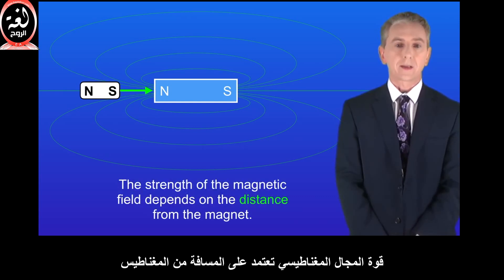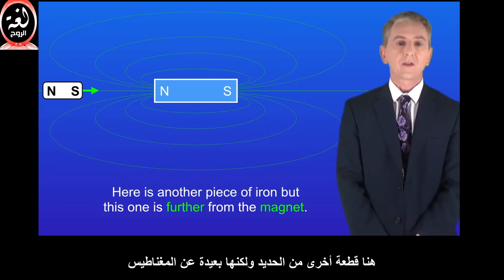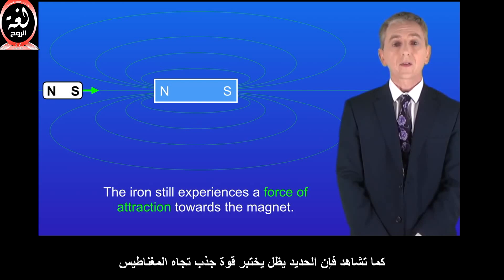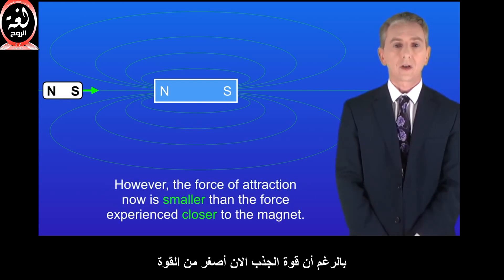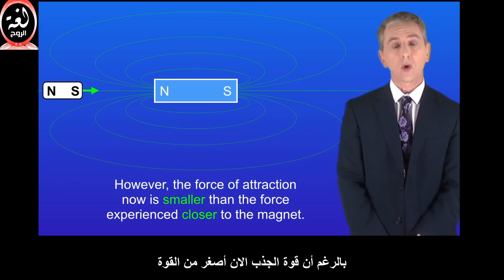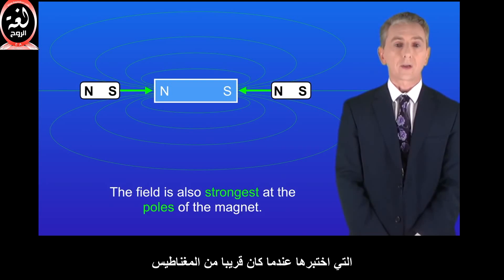The strength of the magnetic field depends on the distance from the magnet. Here's another piece of iron, but this one is further from the magnet. As you can see, the iron still experiences a force of attraction towards the magnet. However, the force of attraction is now smaller than the force experienced closer to the magnet. The field is also strongest at the poles of the magnet.